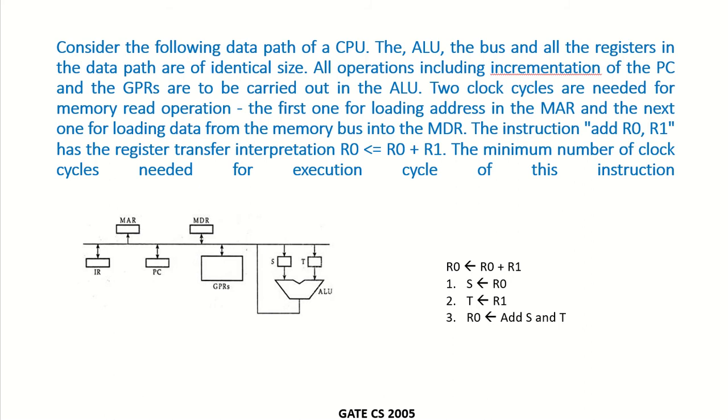This example is based on the execution of an instruction in the processor. Consider the following data path of a CPU. The data path involves the registers, the ALU, and the connections between them.